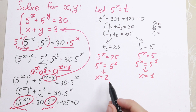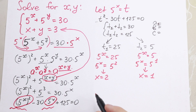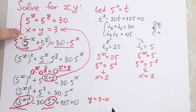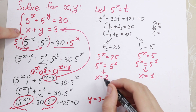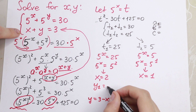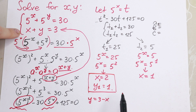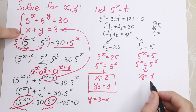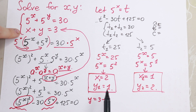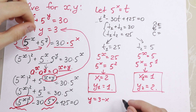But this is only our x values — we need to find y as well. From here, y equals 3 minus x. So x1 equals 2, and y1 equals 3 minus 2, which is 1. This is our first pair of solutions. And for x2 equals 1, y2 equals 3 minus 1, which is 2. So we have two pairs: the first is (2, 1) and the second is (1, 2).